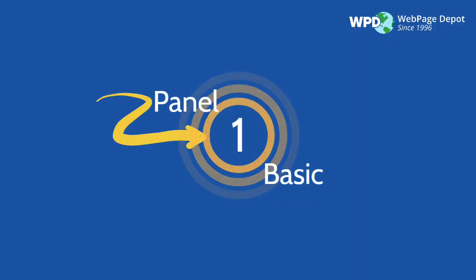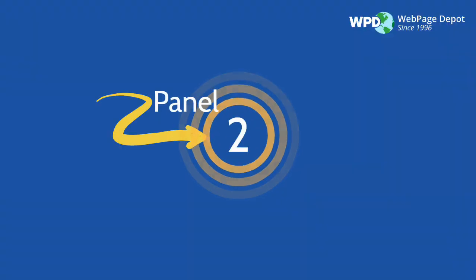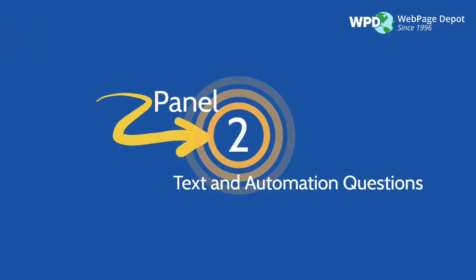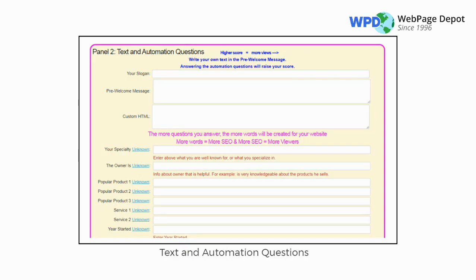Panel 1 is Basic. Enter basic information and save to start the website creation. Panel 2 is Text and Automation Questions. In this panel you can choose to enter the text and answer the automation questions.